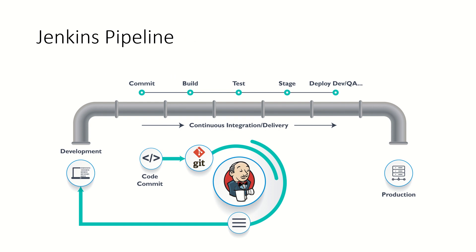This is how the Jenkins pipeline looks. As a developer, you commit your code and push it to Git after creating a Jenkins pipeline. Once you commit your changes to Git, it will start doing the build, take care of testing, and start the deployment in the dev, QA, or UAT environment. Once everything is fine, you can deploy to production. If a build fails, it will immediately notify the developers, who can fix the issue and commit the changes to Git again so the build restarts.